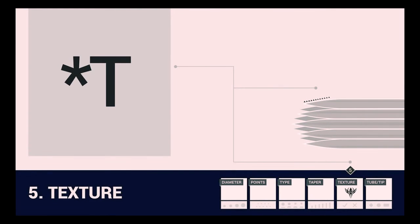A textured needle is simply a needle with a taper that is not polished, and as a result, the needle will hold more ink than a polished needle. The presence of an asterisk followed by a T inside of the fifth box titled texture on the needle ID label signifies that the needles are textured. The absence of this symbol signifies that the needles inside of the box are not textured.